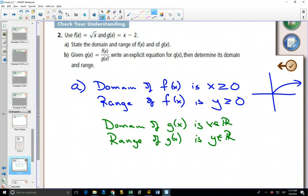Now, given q of x is f of x divided by g of x, we want to write an explicit equation. So again, our explicit equation, that's where you divide things and just write it in terms of x. So we have f of x on top, g of x on the bottom. And we're going to try to determine the domain and range for this graph.